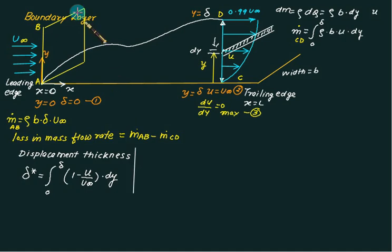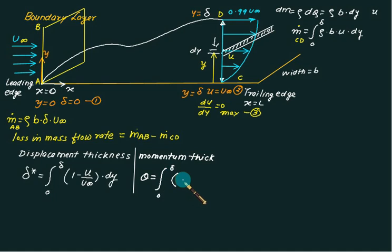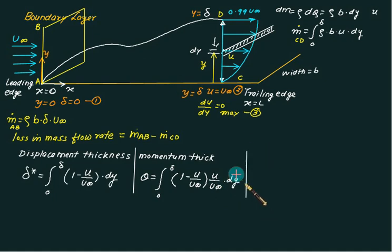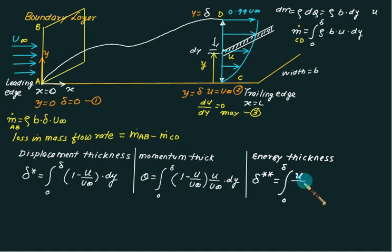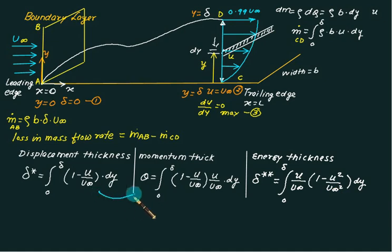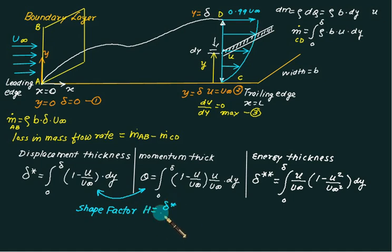Since there is a loss in mass, there is also a loss in momentum, represented by momentum thickness theta: theta equals integral from 0 to delta of (1 minus u/u-infinity) multiplied by (u/u-infinity) dy. We also have energy thickness, delta double-star, representing the loss in kinetic energy: delta double-star equals integral from 0 to delta of (u/u-infinity) multiplied by (1 minus u²/u-infinity²) dy. The displacement thickness and momentum thickness are related by the shape factor H, where H equals delta-star divided by theta.